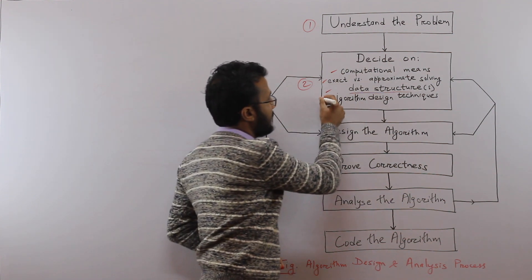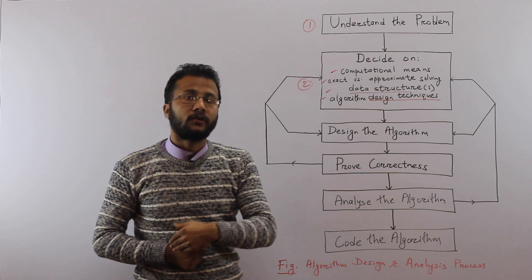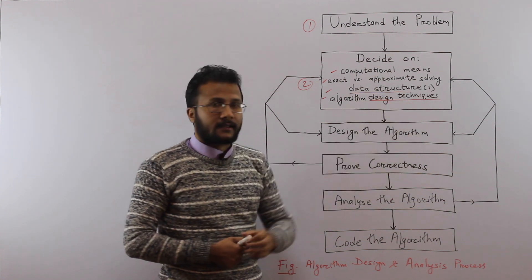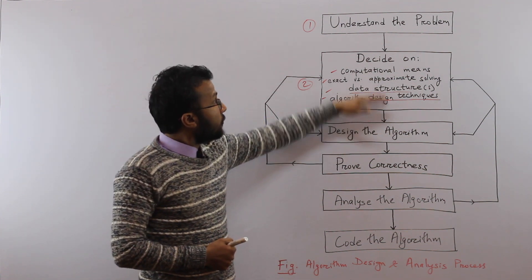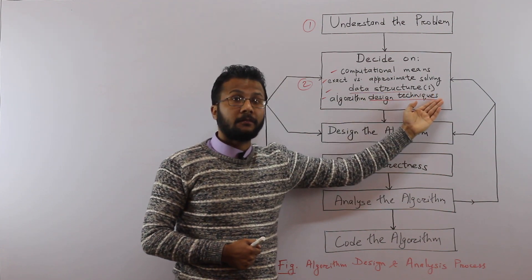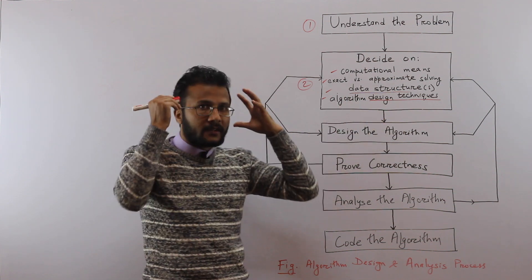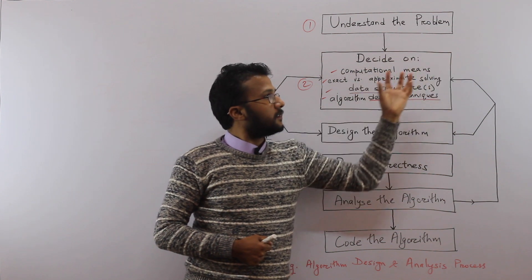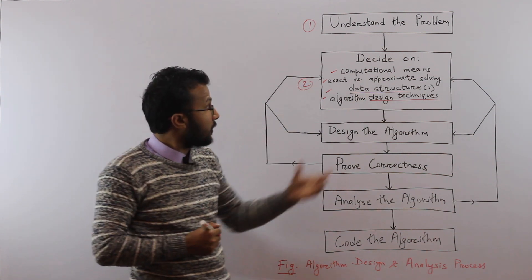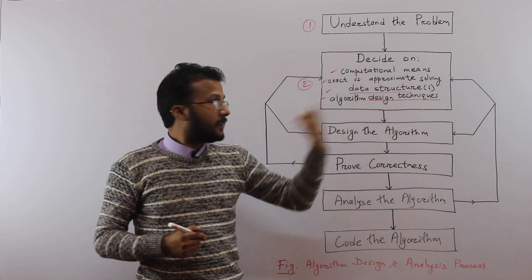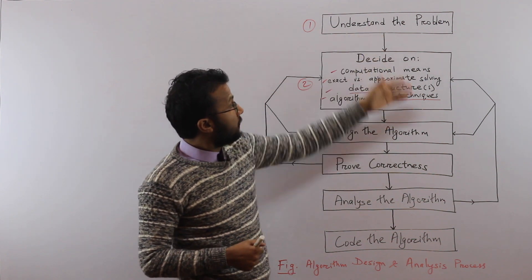The next aspect is algorithm design techniques — the general techniques for solving a given problem. There are various design techniques: divide and conquer, greedy, dynamic programming, backtracking, and so on. Your problem's solution may fall under one of these techniques, so knowing design techniques is very important as it gives you a big picture to relate your problem to known solution strategies. In module 2 we will be discussing all these design principles in detail.